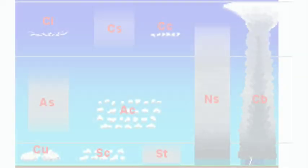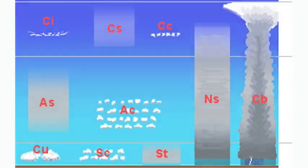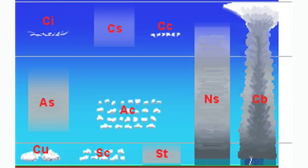Clouds form at different heights of the atmosphere, depending on the amount of water vapor a cloud contains, or the temperature at the height it's at, the wind, or the interplay of other air masses.